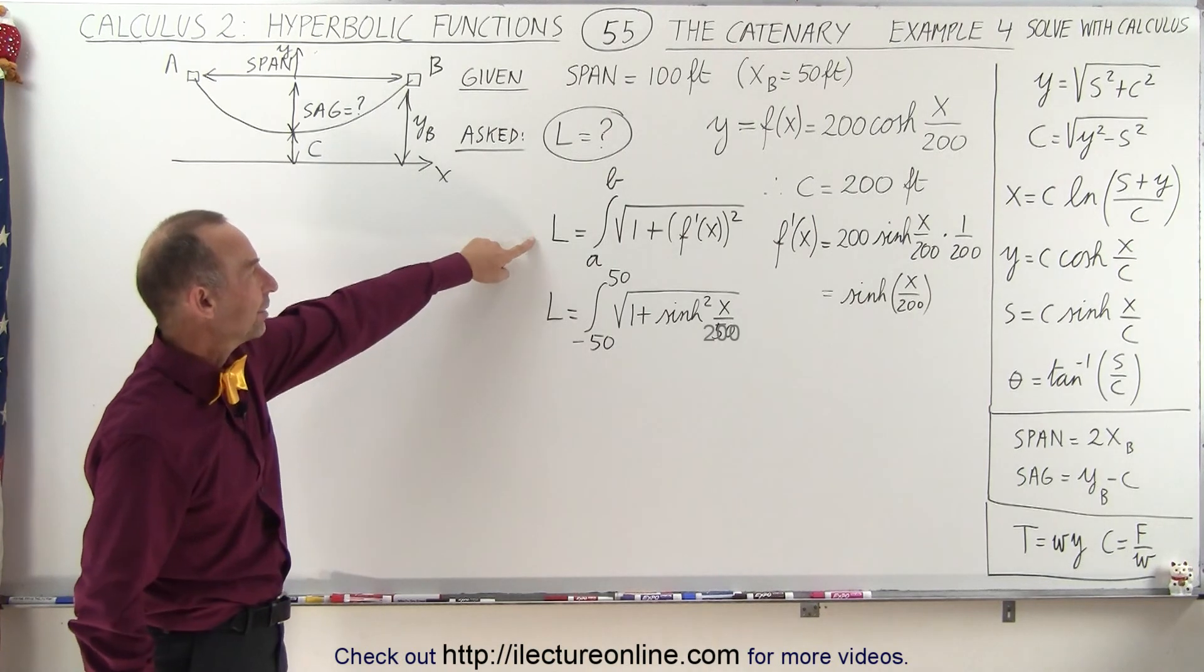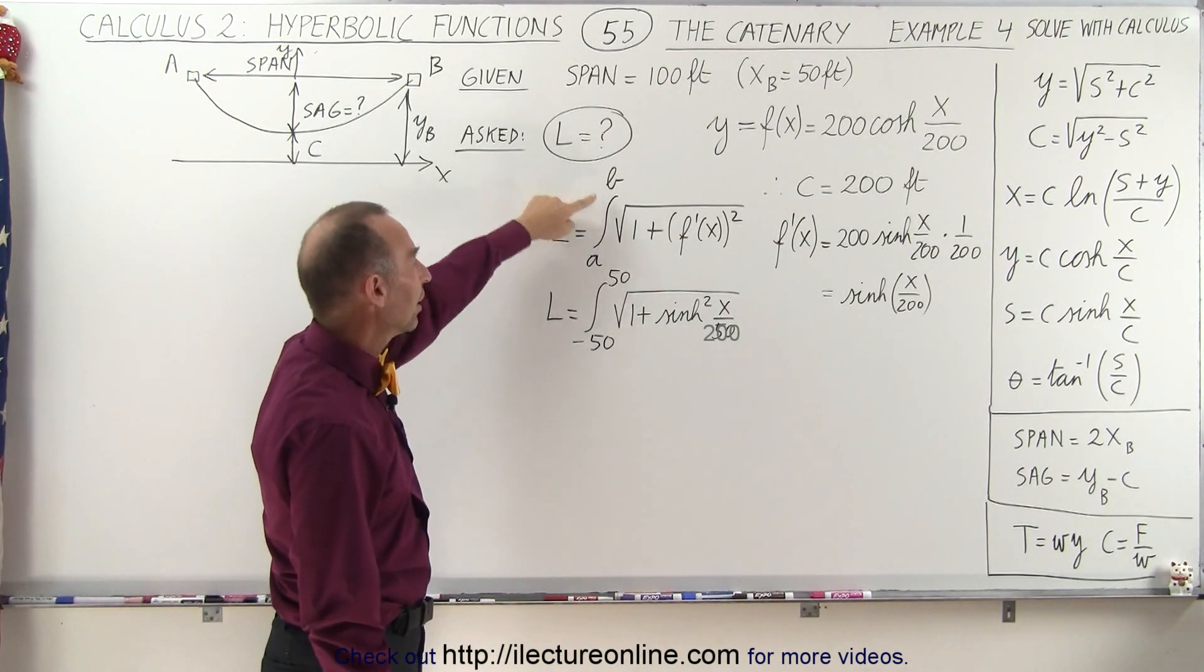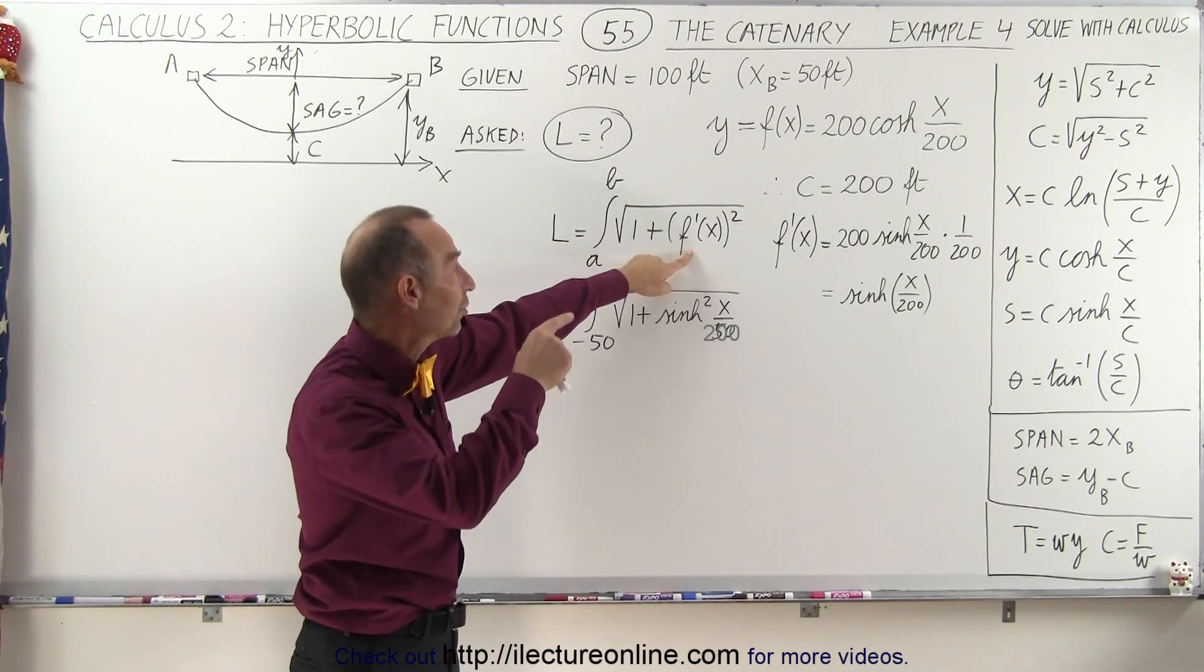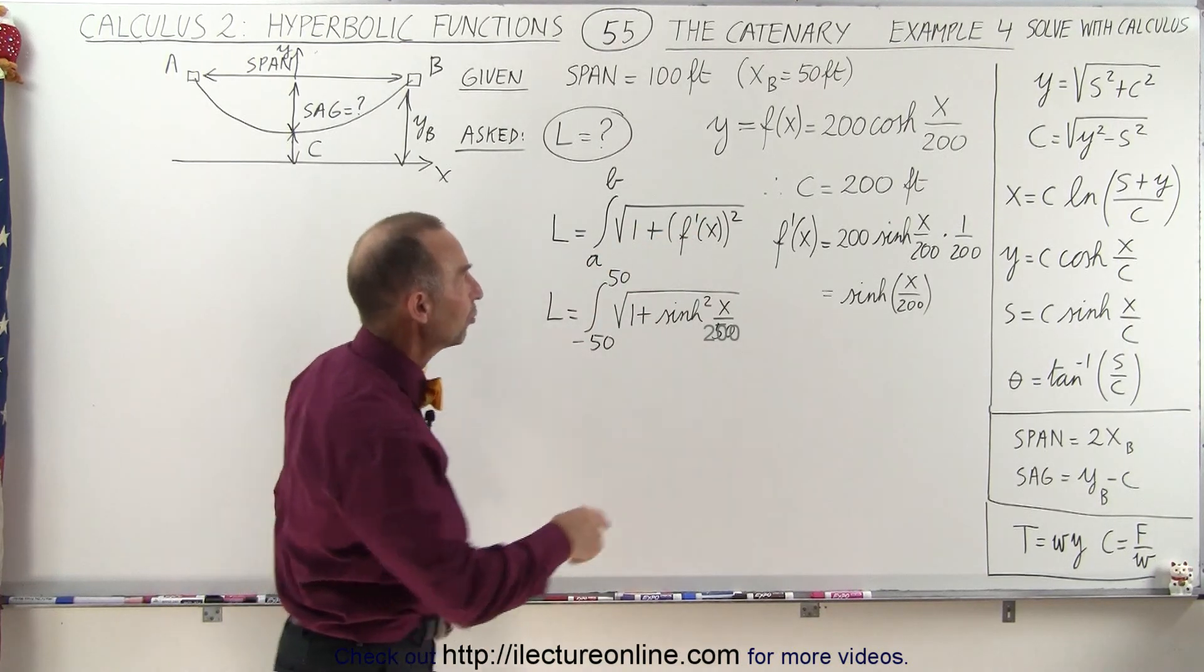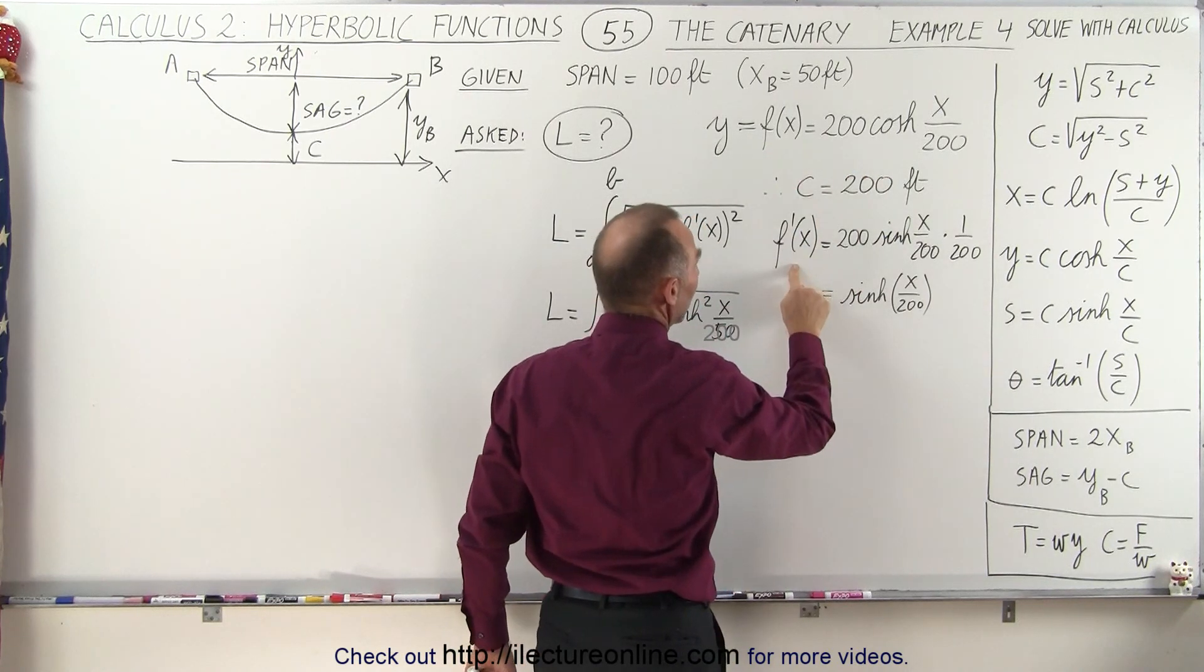We know that the length of a hanging cable is equal to the integral from a to b of the square root of 1 plus the derivative of the function that describes the equation, quantity squared. And since we were given the equation, we can take the derivative of that equation.